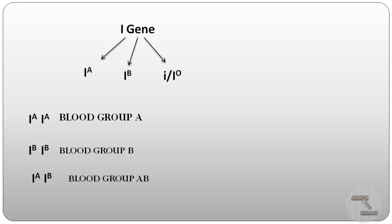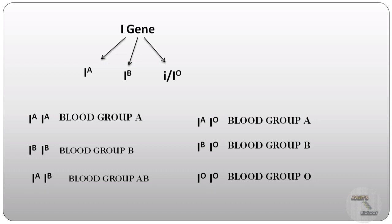But if I^A and I^O are present together, then they will give rise to the blood group A, as I^A is more dominant than I^O. And if I^B and I^O are present together, they will give rise to the blood group B. And if the two alleles I^O and I^O are present together, then they will give rise to the blood group O.